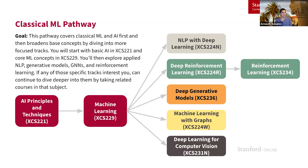First, we'll talk about the classical ML pathway. This is a path perfect for those who want to strengthen their AI/ML fundamentals and then branch into different specialties. You can start with our AI fundamentals course and then our ML fundamentals course, and after that take any track of courses you wish — for example, NLP, robotics-based classes, or vision classes, just to name a few.